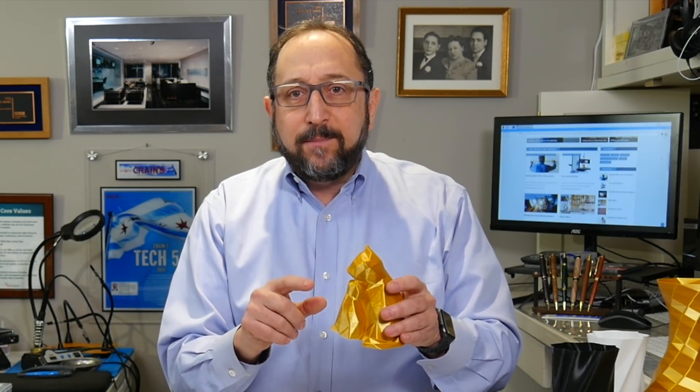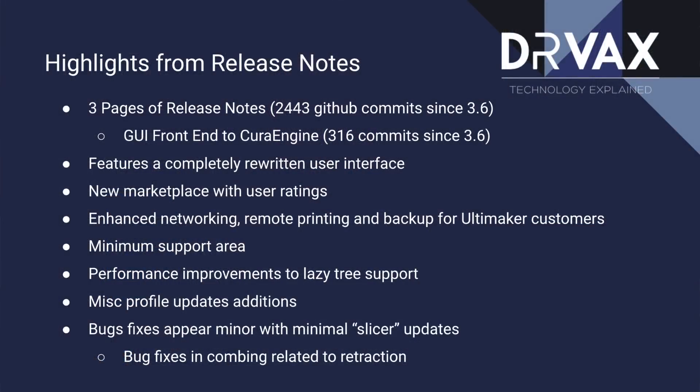In this new version of Cura, you've always had the ability to block supports in a particular area, but you also now have the ability to say if a support is going to be smaller than a particular size, don't put it in. That might have been helpful in this print. There are also a number of performance improvements in the slicer, some profile updates, and general bug fixes.